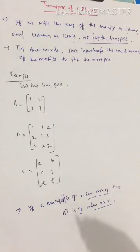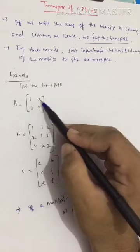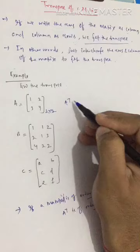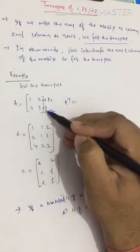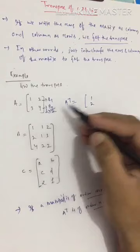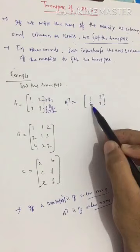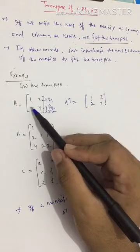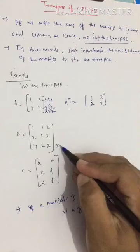You will better understand with an example. The first matrix I have taken is [1, 2; 3, 4], which is a 2×2 matrix. To find its transpose, write A-transpose and interchange the rows into columns. R1 written as C1 gives 1, 2 and R2 as C2 gives 3, 4. So A-transpose is [1, 3; 2, 4] — first row into first column, second row into second column.